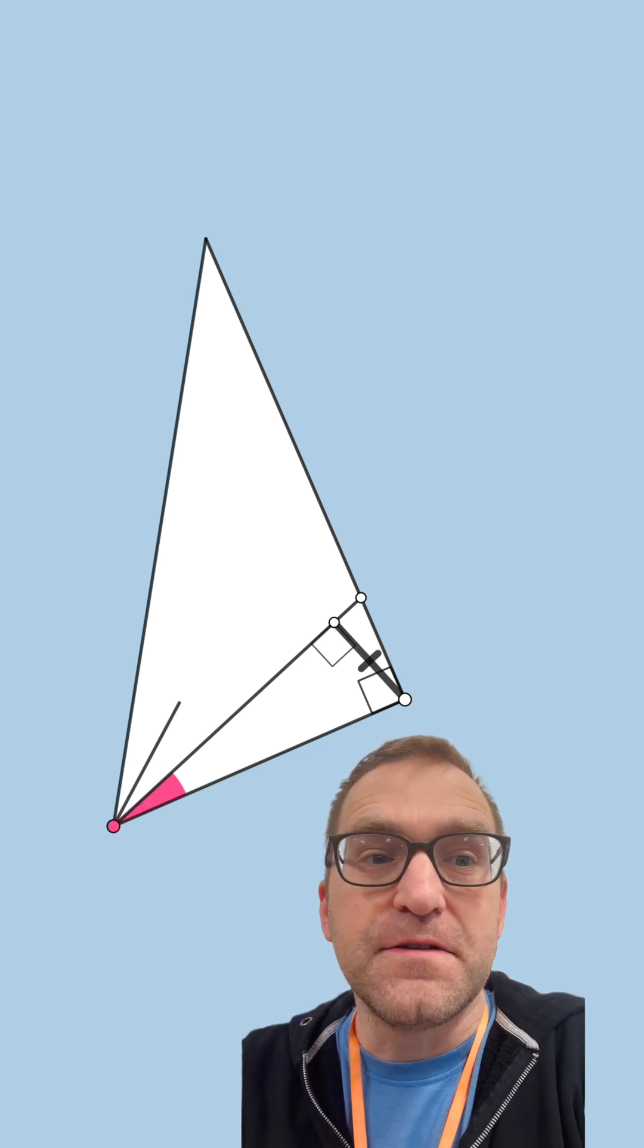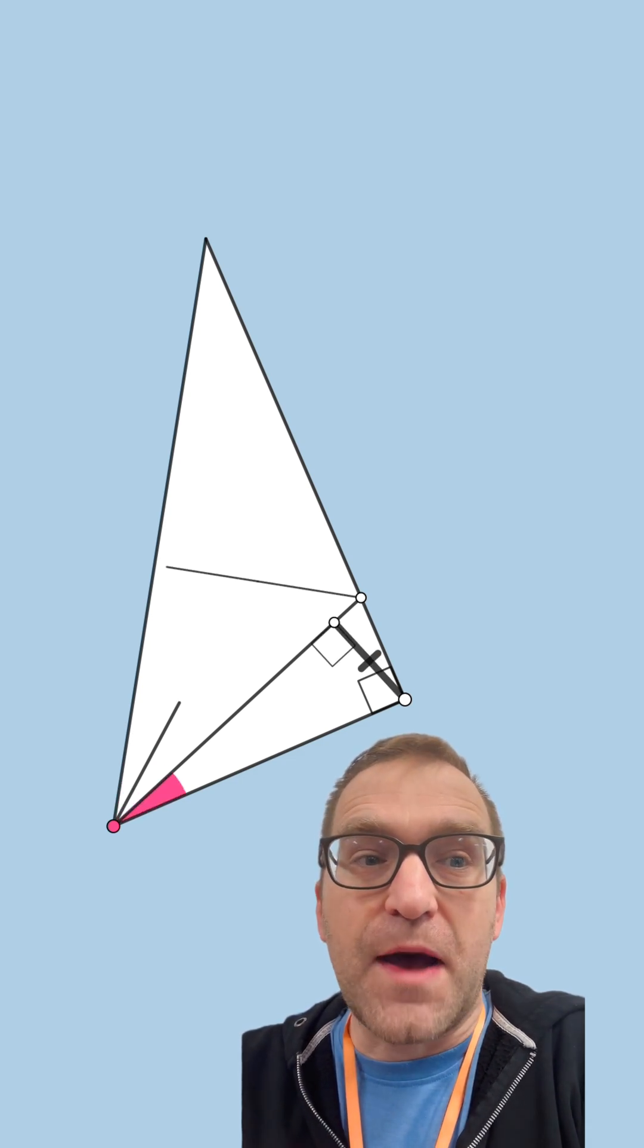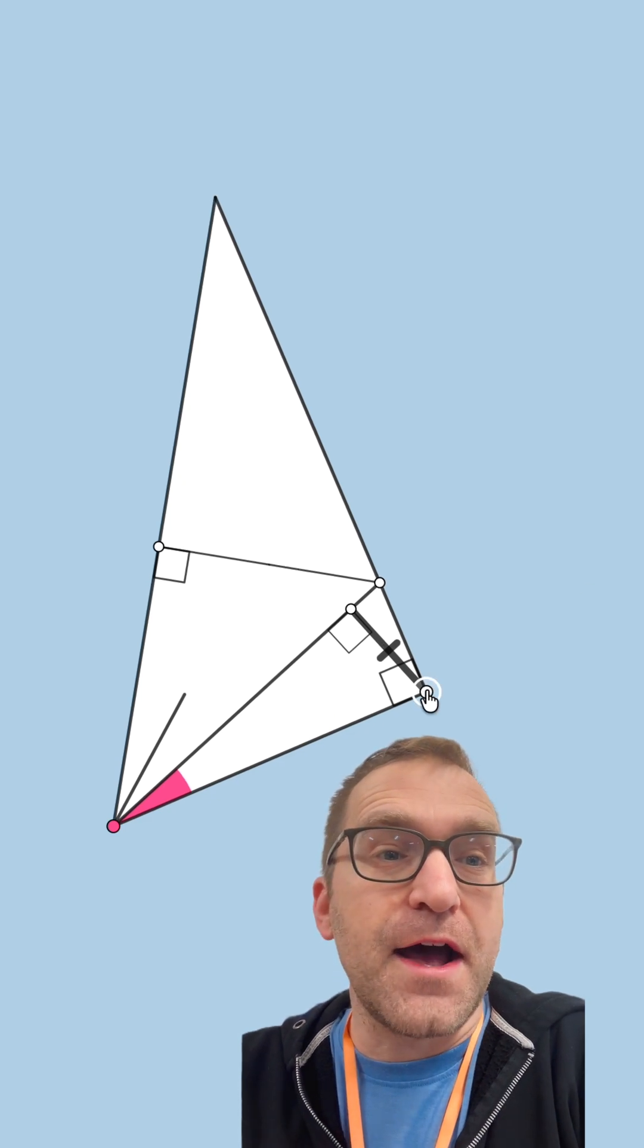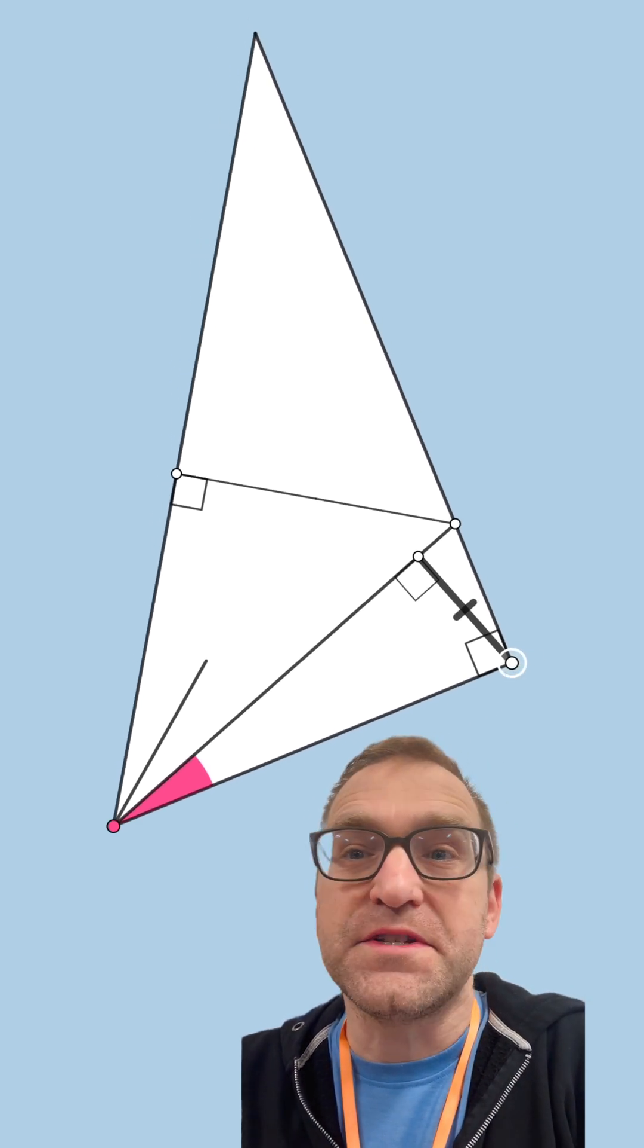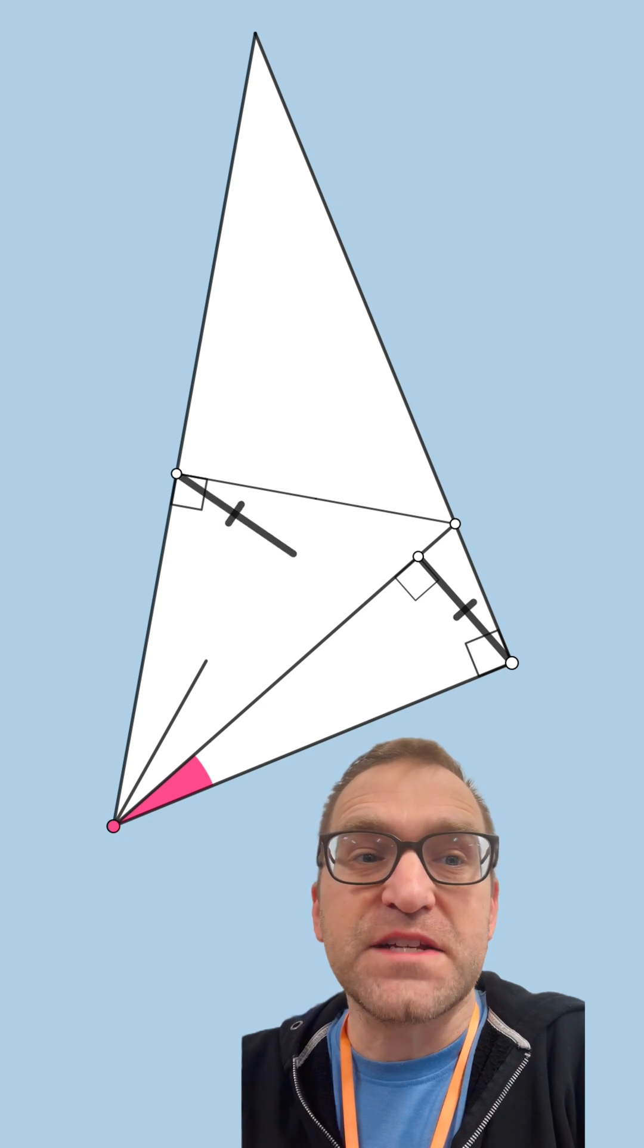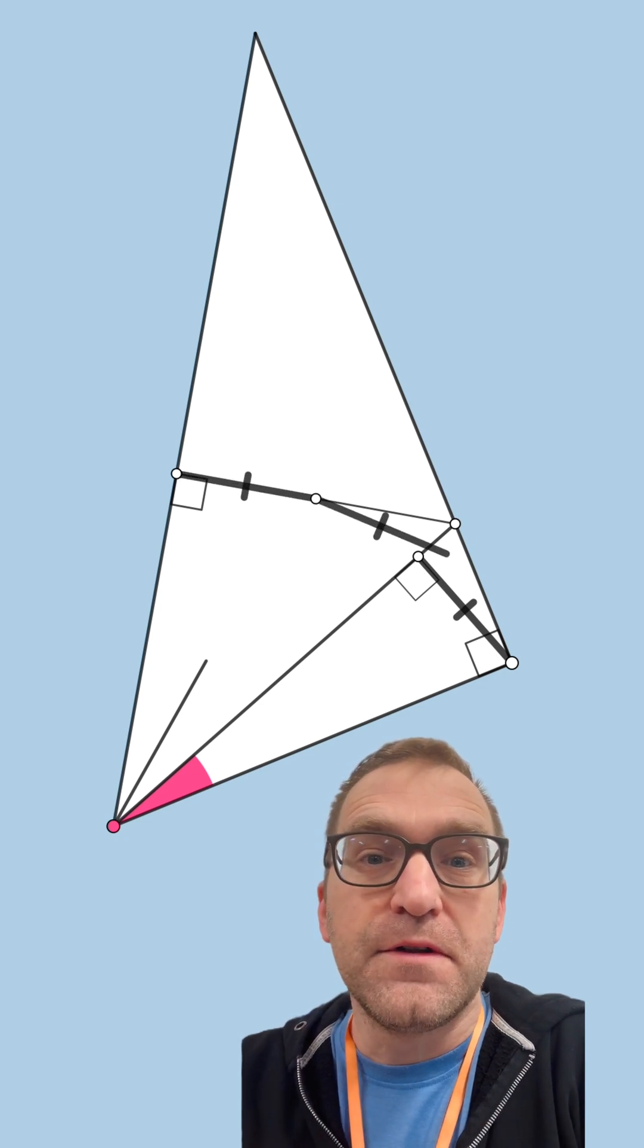So trisect the angle, drop a perpendicular there, drop another perpendicular there. And no matter how you slice it or dice it, you will always get that last perpendicular being double the length of the first.